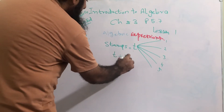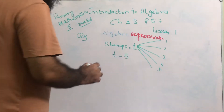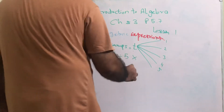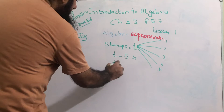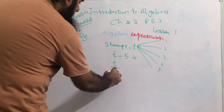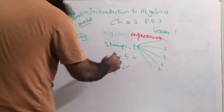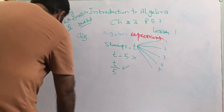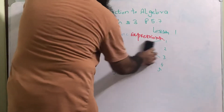In algebraic language, we don't write it like that. It will be written as t divided by 5. So this is the algebraic expression for question number 9. Then we'll be doing question number 10, which is on the same page.